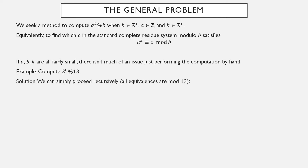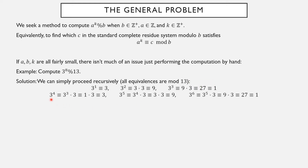We're just going to keep multiplying by 3 over and over again. I have a bunch of equivalences, they're all mod 13. 3 to the 1st is 3. 3 squared is the previous power times 3, so 9. 3 cubed is the previous power times 3, so 27. But resolving this mod 13, 27 is equivalent to 1. Then 3 to the 4th is the previous power times 3. The previous power was 1, so 1 times 3 is 3.